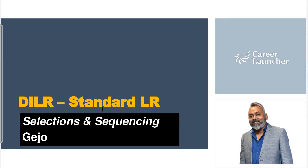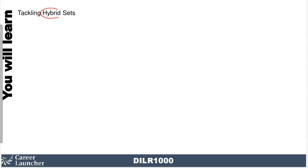Hello and welcome back. You are doing DILR 1000 with me Jijo. In this lesson we will look at a set which has got both selections and sequencing — you could call it a hybrid set. The CAT problem has elements of a hybrid nature. If you are systematic in your approach you can solve all these questions pretty easily. If you are neat, systematic, gather the information, have a good board, and solve patiently without hurrying, you can actually solve it much faster.